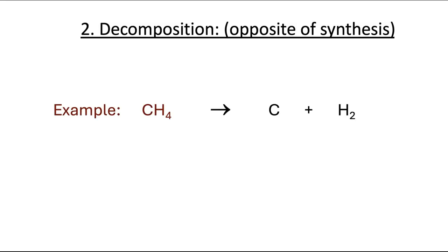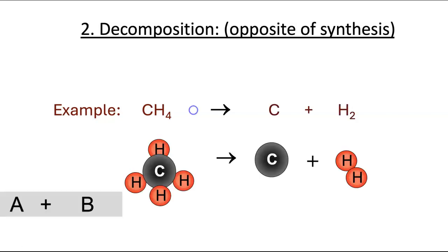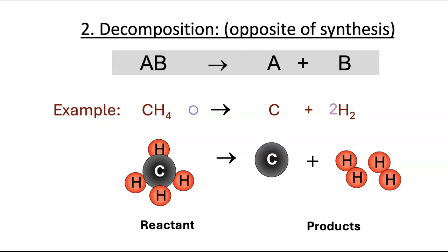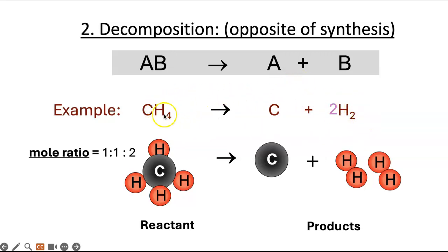In decomposition reactions, we have the reverse of the previous reaction, where methane breaks down into carbon and hydrogen. The mole ratio is 1:1:2. Note that the mole ratio depends on how you have written your reactants and products — if H₂ is listed first and C second, the ratio would be 1:2:1.